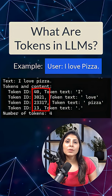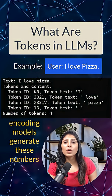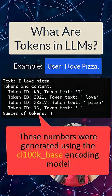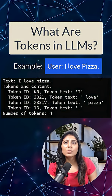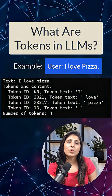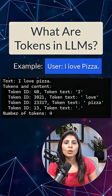These numbers were generated using some encoding model. For example, OpenAI uses an encoding model to convert words into numbers. Every encoding model simply assigns a unique number to each word or to a piece of text.